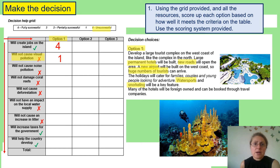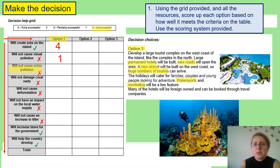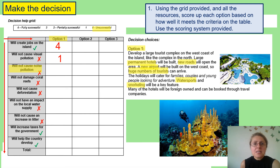The next criterion is noise pollution. Option one involves a large tourist complex, large permanent hotels, new roads, a new airport, and water sports. The noise level is going to increase significantly — consider all the road traffic, air traffic, and jet skis in the water. Together this will all create lots of extra noise. Therefore I'm going to score this a 0: it's going to create noise pollution and does not meet the government's criteria.